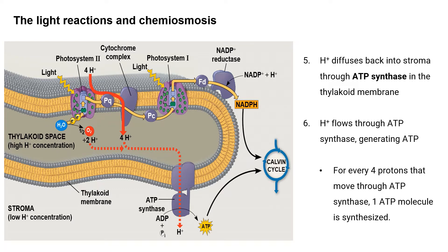Hydrogen ions then diffuse back into the stroma through ATP synthase in the thylakoid membrane. As hydrogen ions flow through ATP synthase, they release energy, and this energy is used to phosphorylate ADP to form ATP. For every four protons that move through ATP synthase, one molecule of ATP is synthesized. The mechanism by which phosphorylation of ADP is coupled to diffusion down a proton gradient is called chemiosmosis.